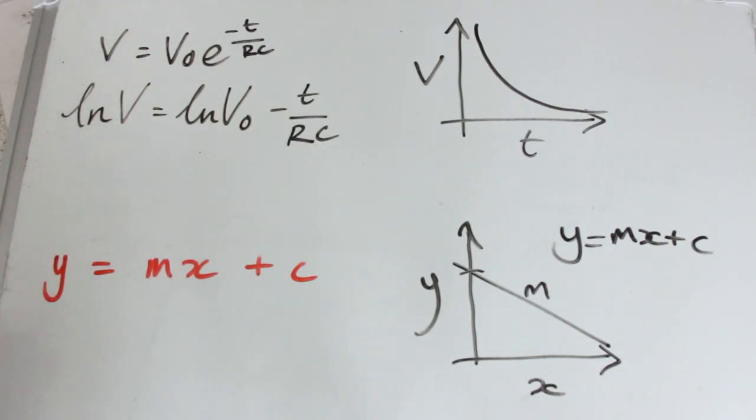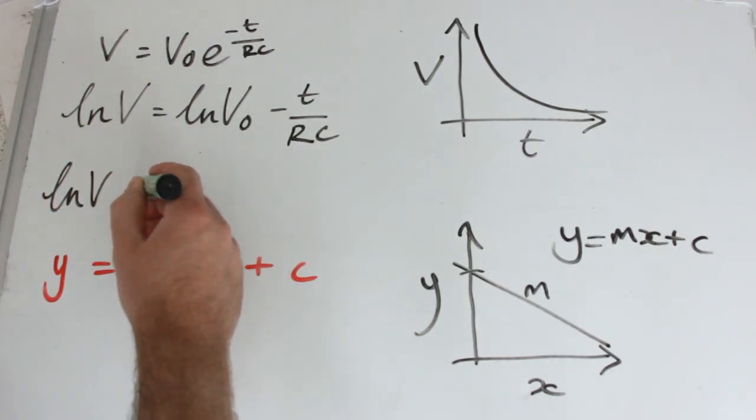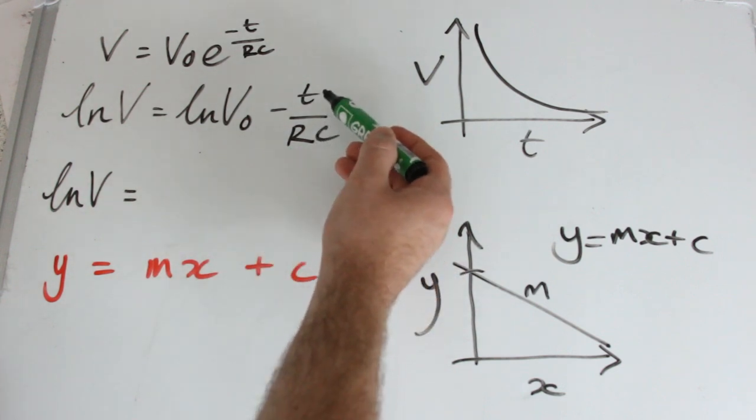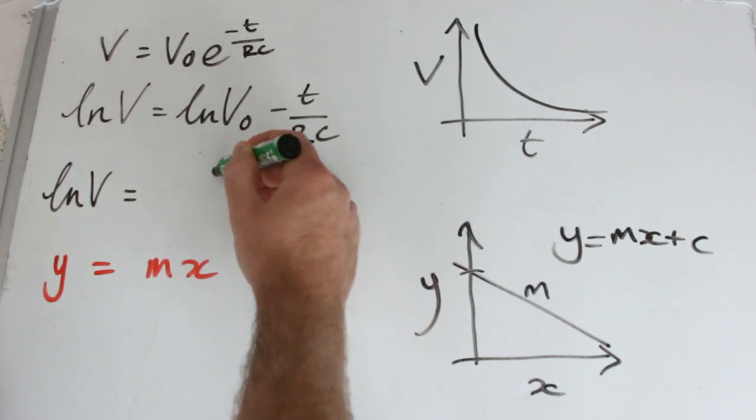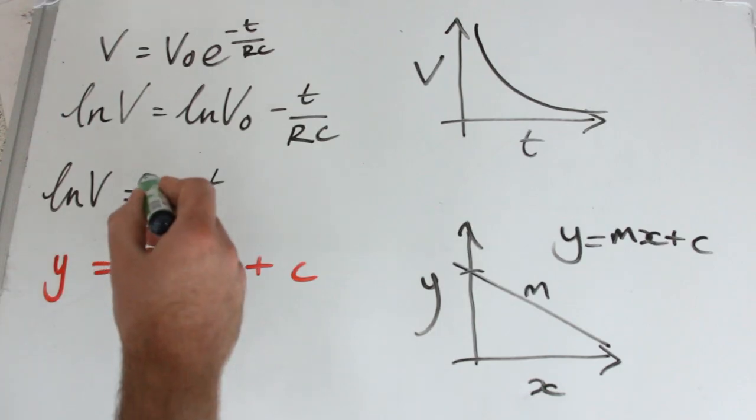So all I'm really doing now is just moving the equation around just so that it fits into this form. So I'm happy with ln V where it is. Okay, but I want time to be where X is. Okay, now if you can see what time is being multiplied by, time is being multiplied by minus 1 over RC.